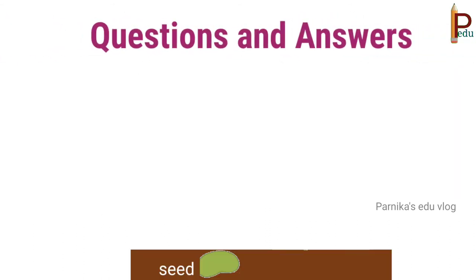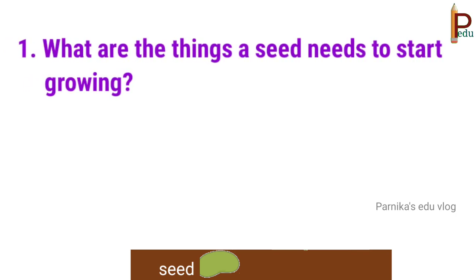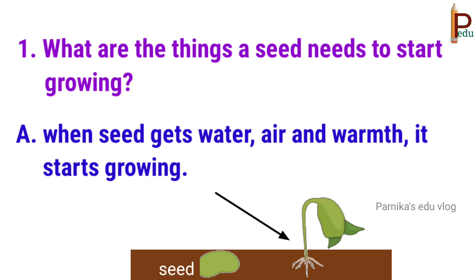Next, question and answers. First one: what are the things a seed needs to start growing? Answer: when a seed gets water, air, and warmth, it starts growing.